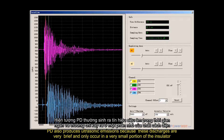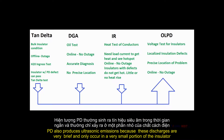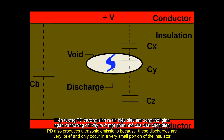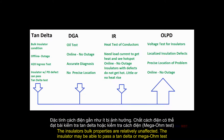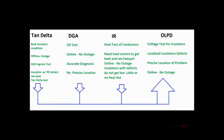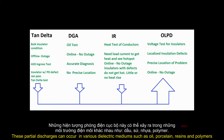PD also produces ultrasonic emissions. Because these discharges are very brief and only occur in a very small portion of the insulator, the insulator's bulk properties are relatively unaffected — the insulator may be able to pass a tan delta or mega-ohm test. These partial discharges can occur in various dielectric mediums such as oil, porcelain, resins, and polymers.